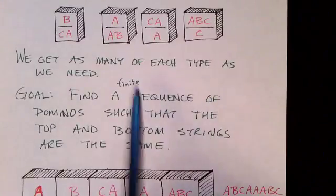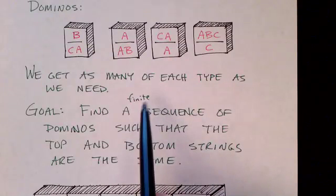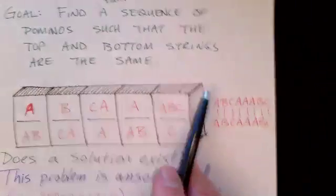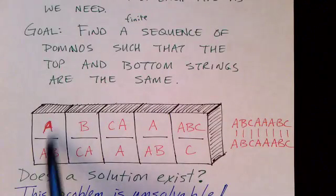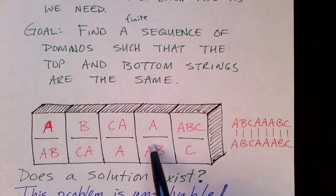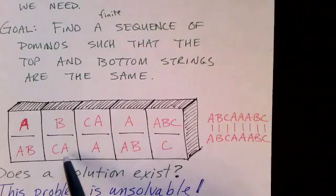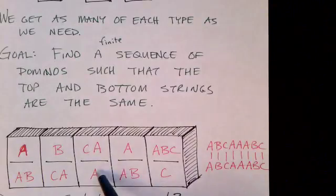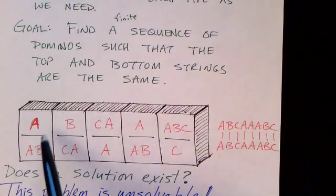The goal, given these four dominoes, is to find a finite sequence of dominoes such that the top string and the bottom strings are the same. Here's a solution. Notice that we're using the A over AB tile twice. We also have a B over CA tile that we're using just once, and we're using the CA over A tile here, and then we're using the last tile in the last position.